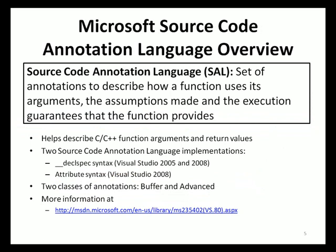The Microsoft Source Code Annotation Language is a set of annotations to help describe how a C or C++ function uses its arguments, the assumptions made, and the execution guarantees that the function provides. There are two implementations: DeclSpec syntax, supported in both Microsoft Visual Studio 2005 and 2008, and Attribute syntax, supported only in Microsoft Visual Studio 2008. The examples shown in this presentation use DeclSpec. There are two classes of annotations: buffer annotations and advanced annotations.